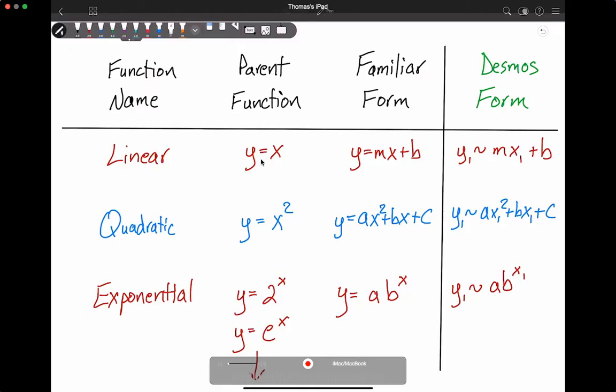The parent function is y equals x for linear, and a familiar form from algebra one that you remember is y equals mx plus b. So when you do regressions in Desmos form, you're going to have y equals mx plus b.